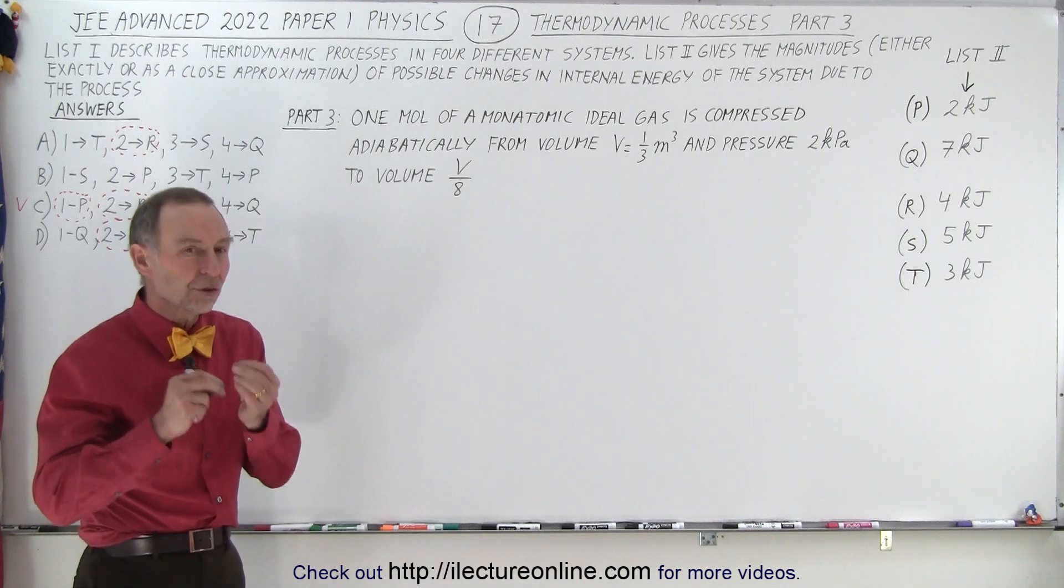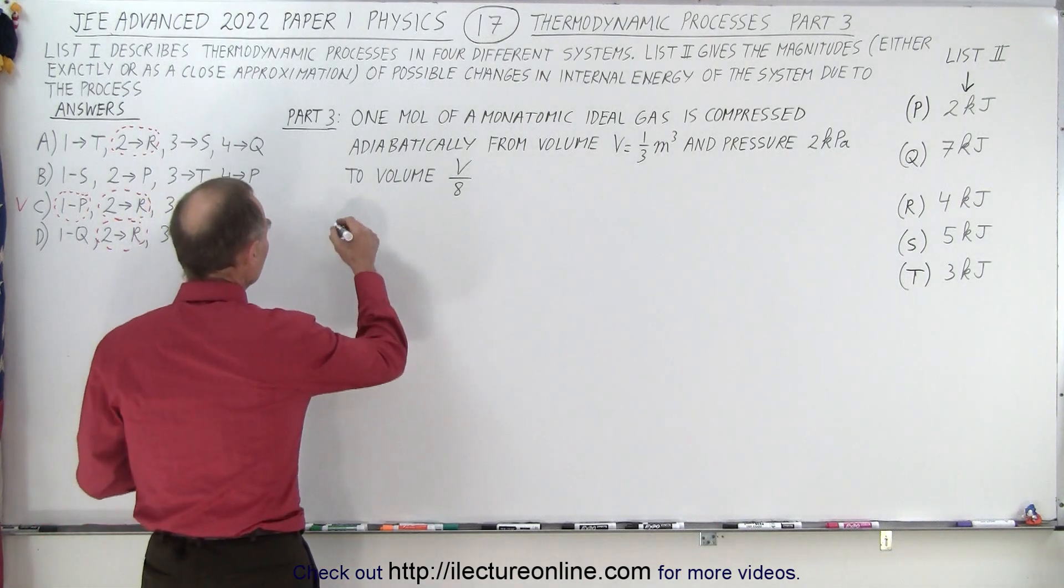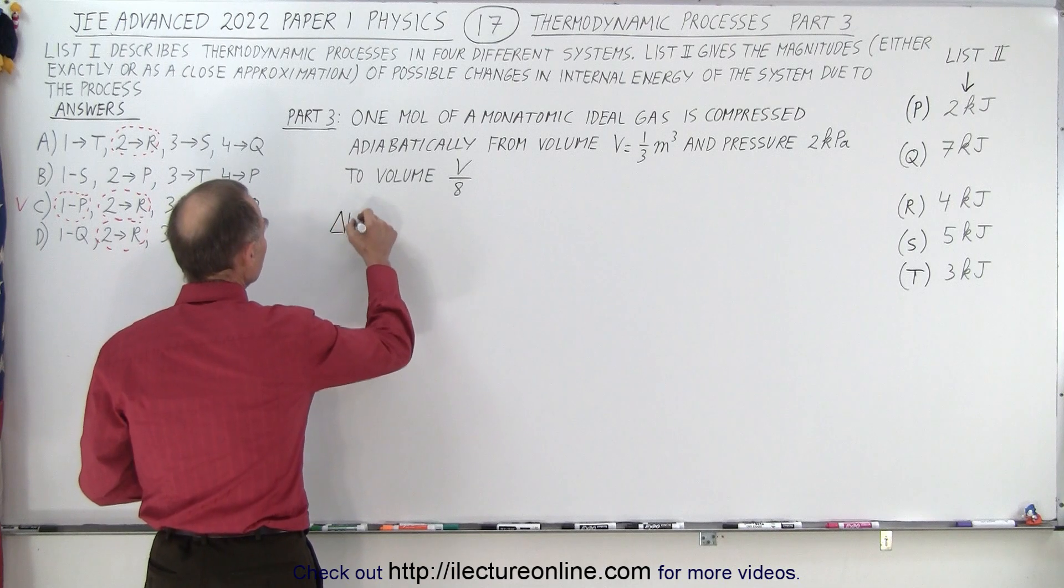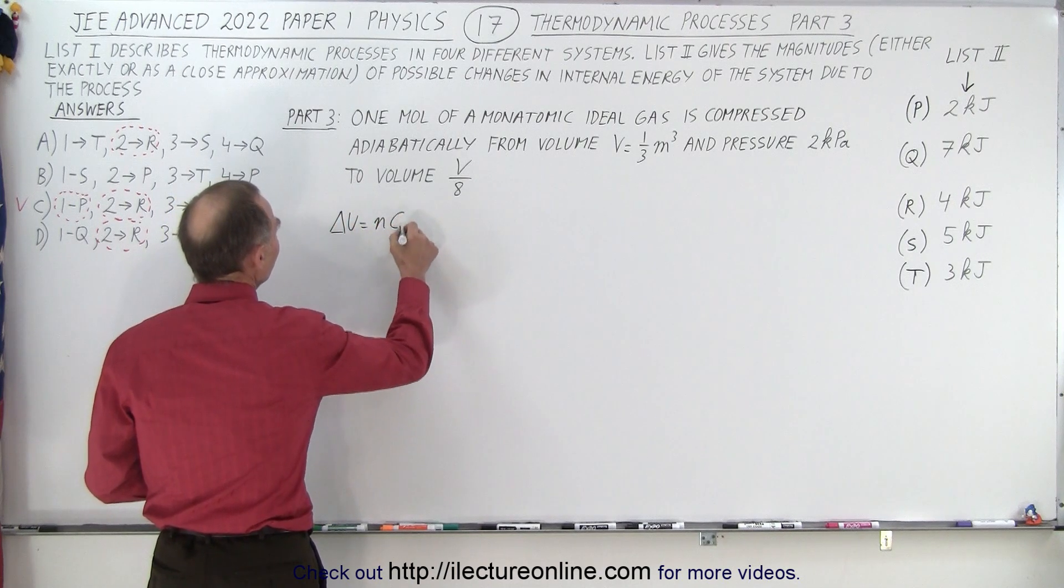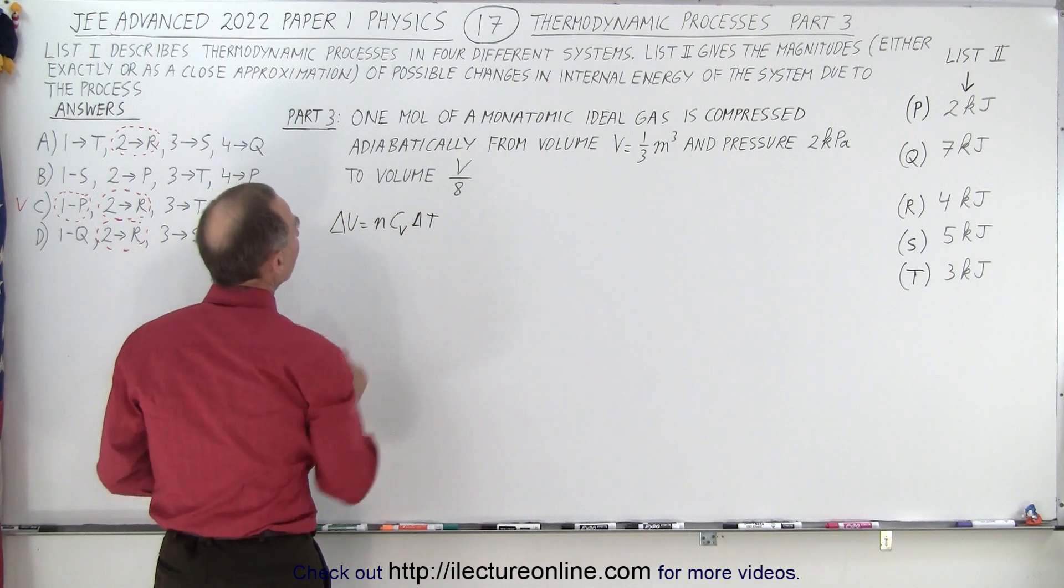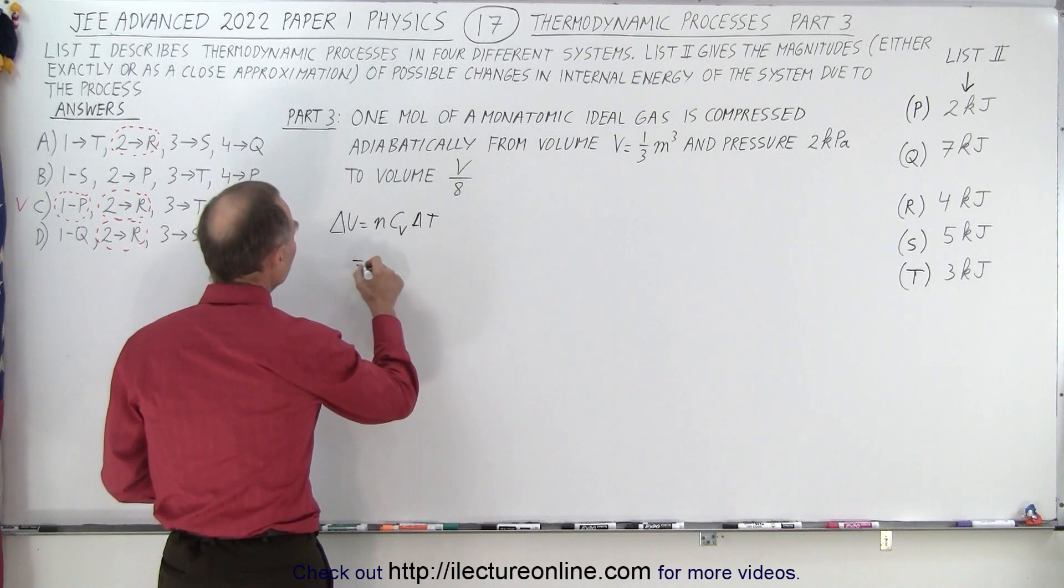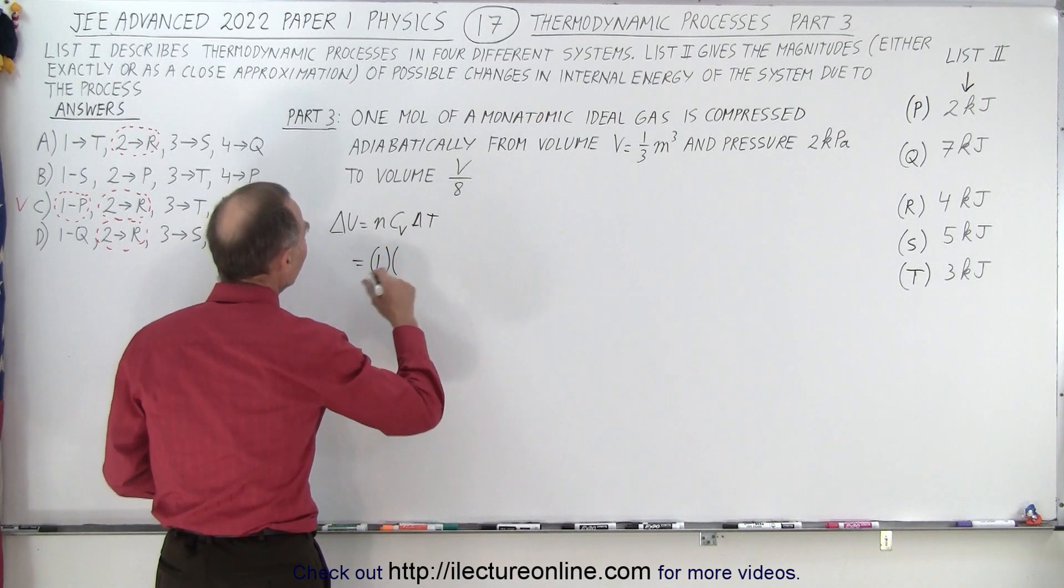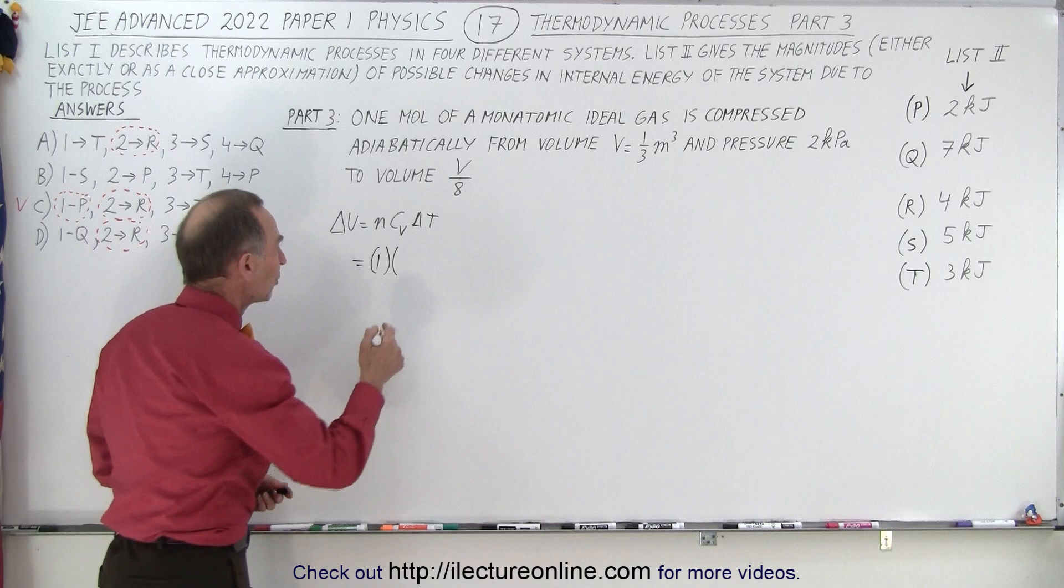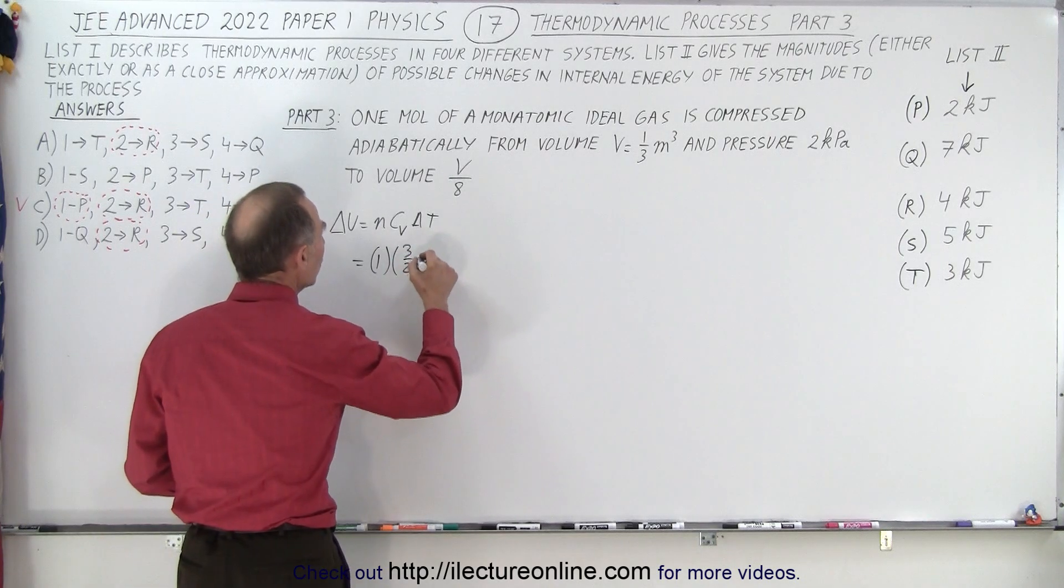We're trying to find the change in internal energy. The change in internal energy is delta U equals N C sub V delta T. They tell us we have one mole, so this would be one. C sub V for a monatomic gas would be 3 over 2 R.